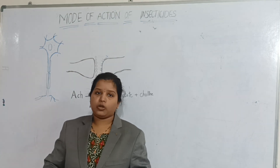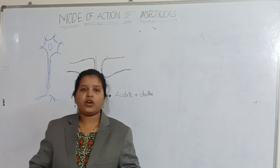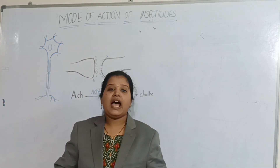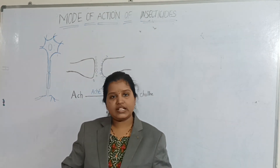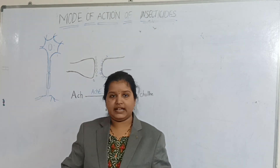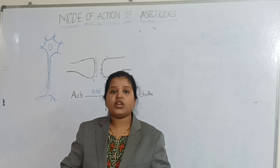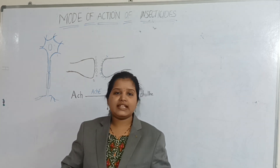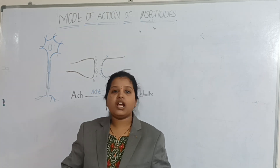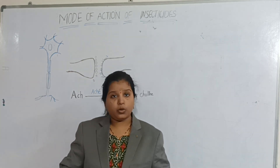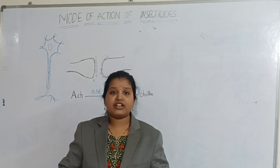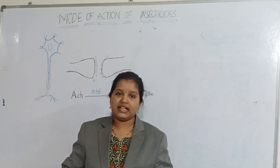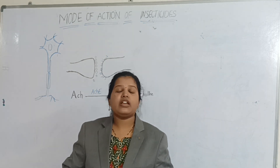Both organophosphates and carbamate insecticides are acetylcholinesterase inhibitors. In order to know the mode of action of these insecticides, we need to first know the function of acetylcholine in the insect nervous system.